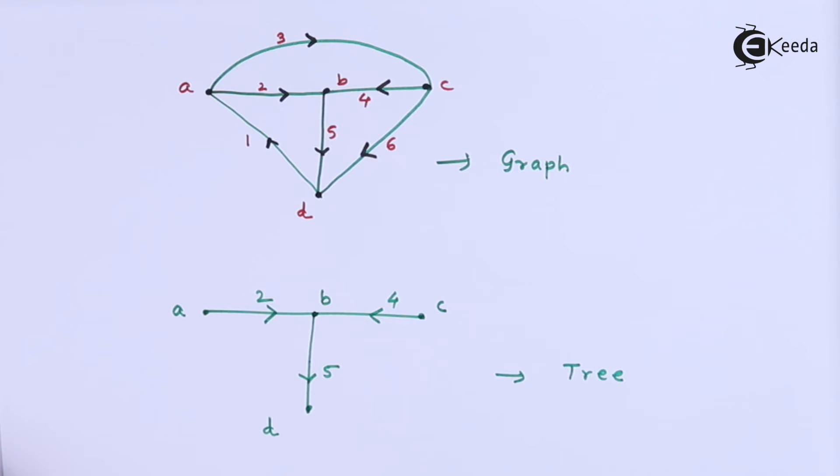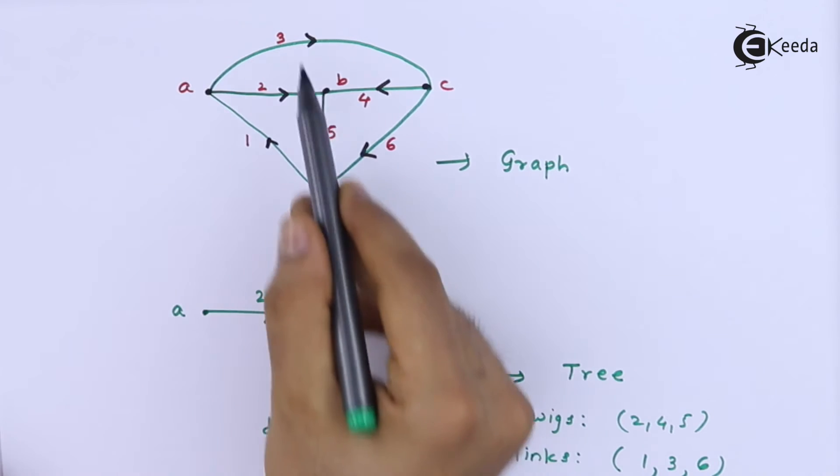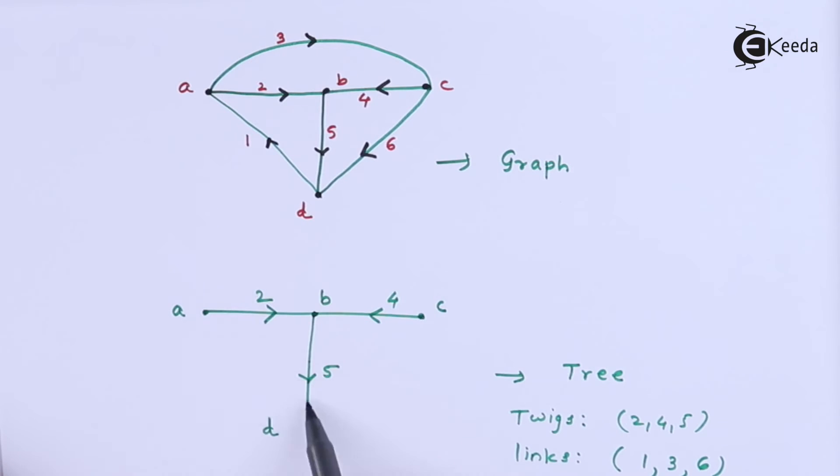Now next question is to get cut set matrix or fundamental cut set matrix. So for that, along with this tree, we will draw the links because these are the twigs. 2, 4 and 5 are twigs. So remaining are links. That means 1, 3, 6. So 1, 3 and 6, which are not present here. It is not present. So we have to show it by dotted line.